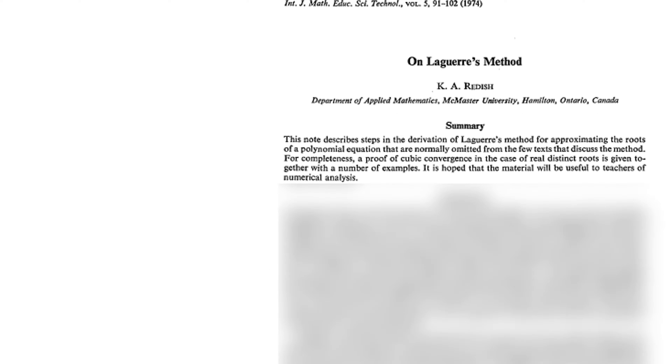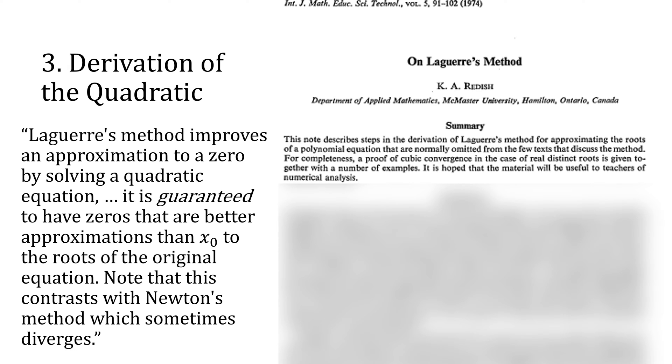As to why this works, let's look at Reddish's paper on Laguerre's method where he writes: Laguerre's method improves an approximation to a zero by solving a quadratic equation. It is guaranteed to have zeros that are better approximations than x0 to the roots of the original equation. Note that this contrasts with Newton's method which sometimes diverges.